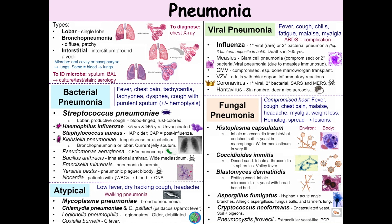Klebsiella pneumoniae is an opportunistic infection causing pneumonia in those with lung disease or alcoholism. It typically causes a nosocomial bronchopneumonia or a community-acquired lobar pneumonia. You should note that it oftentimes causes destructive changes with marked inflammation and hemorrhaging, leading to a bloody, thick, mucoid sputum.